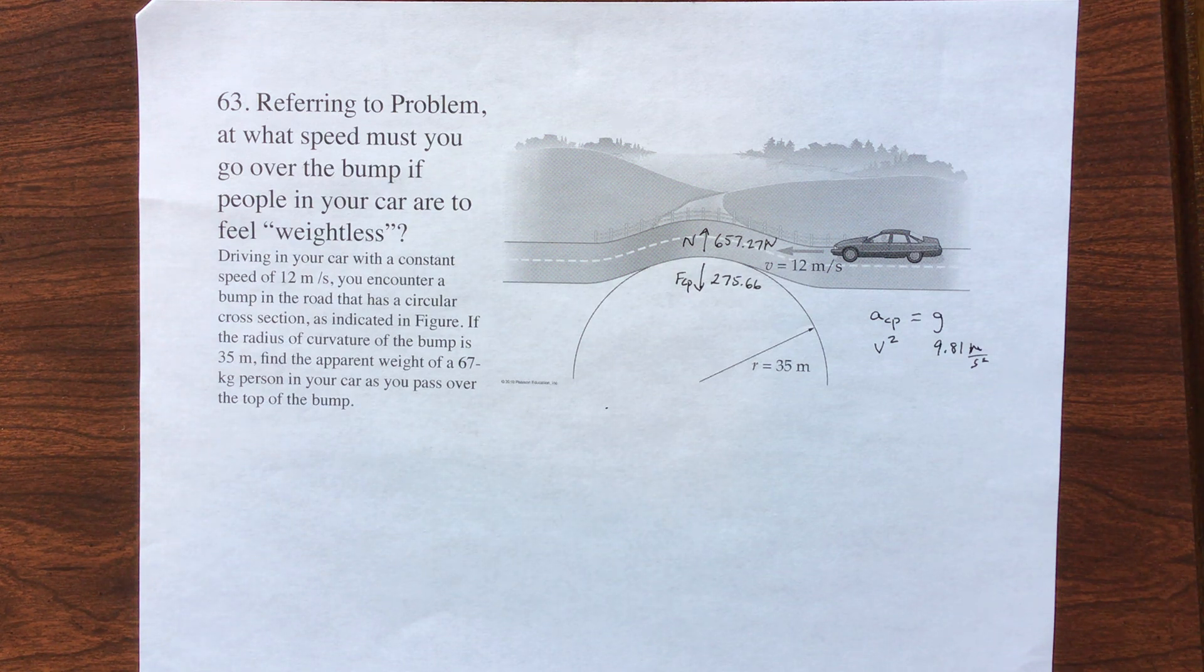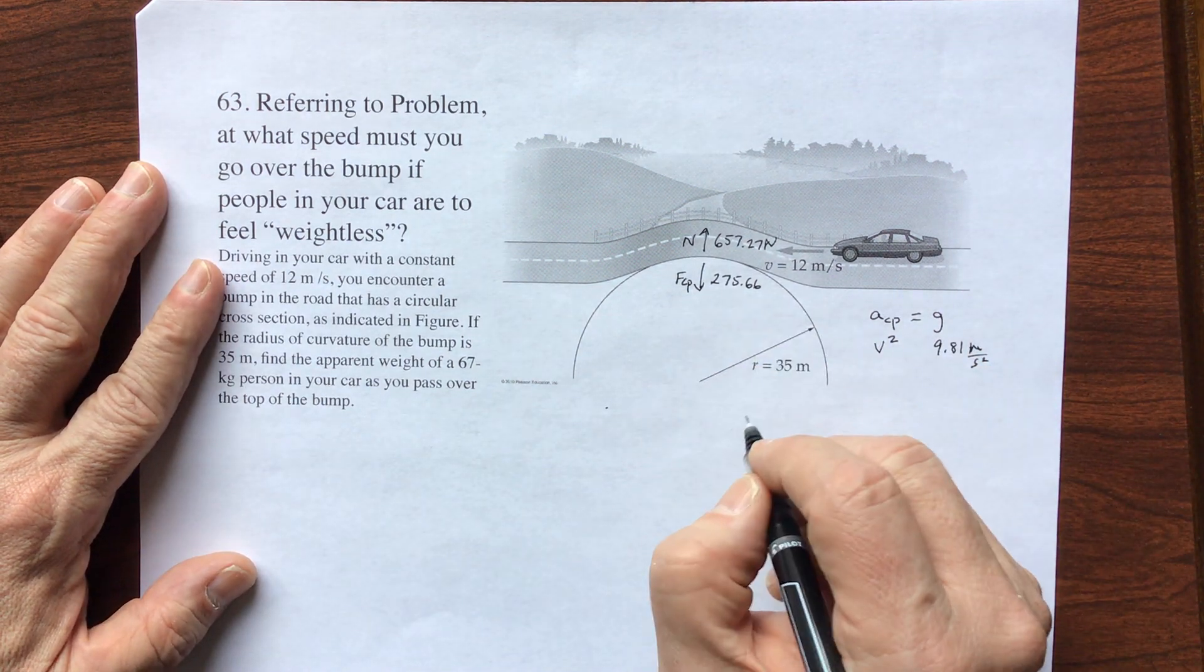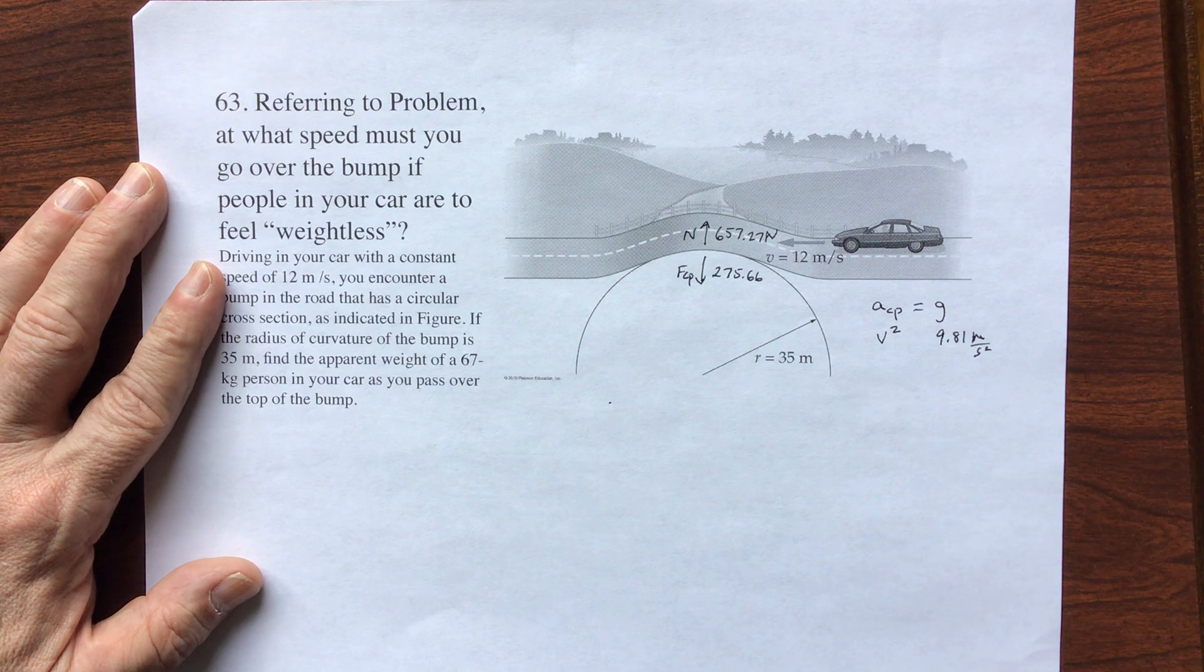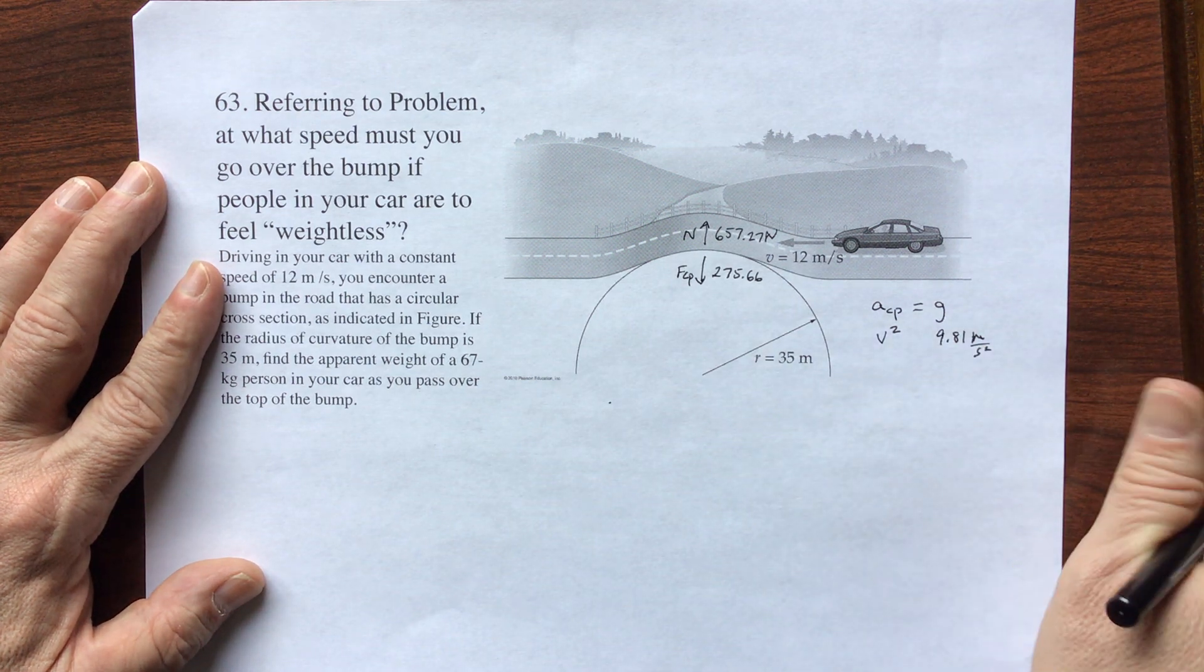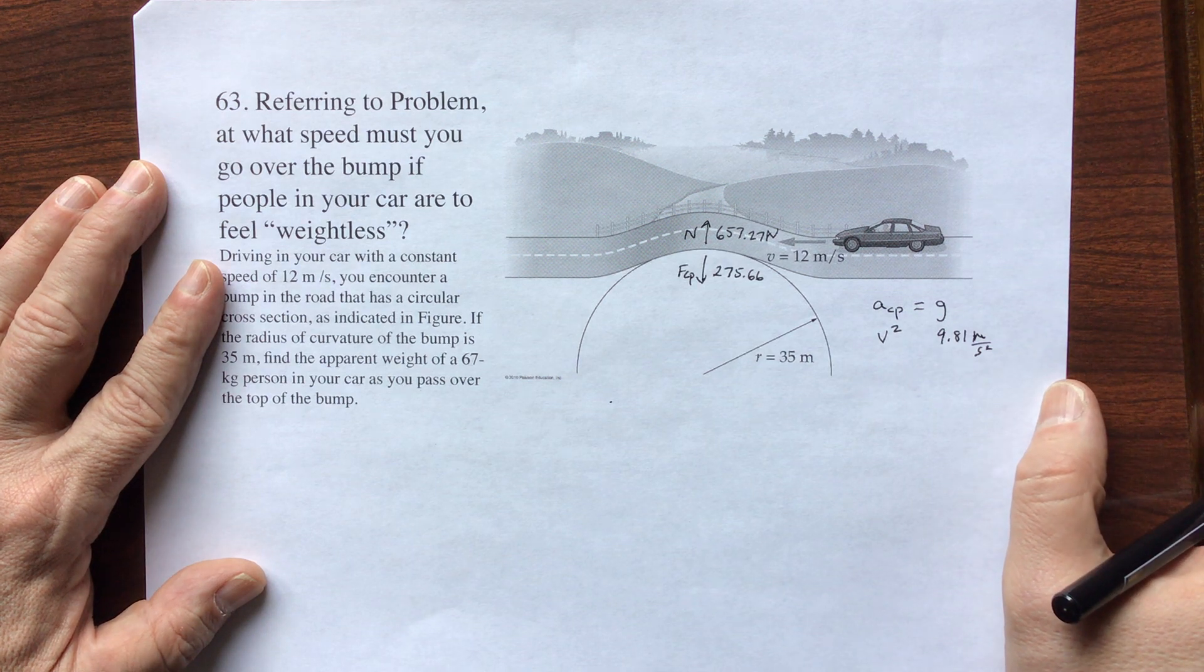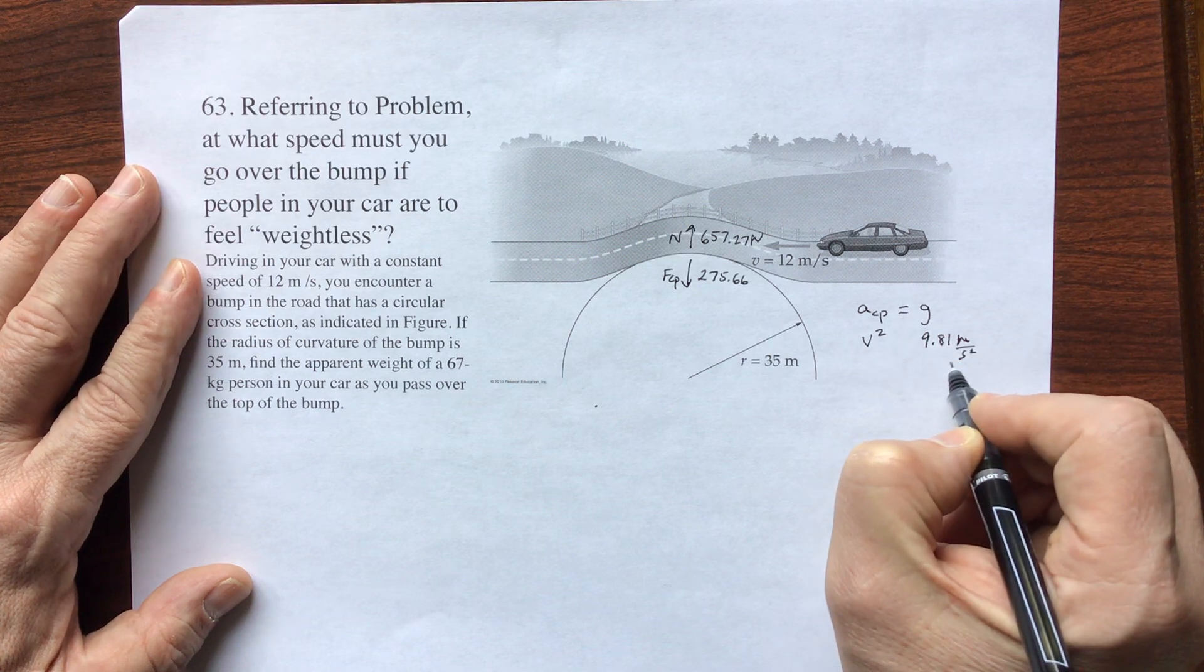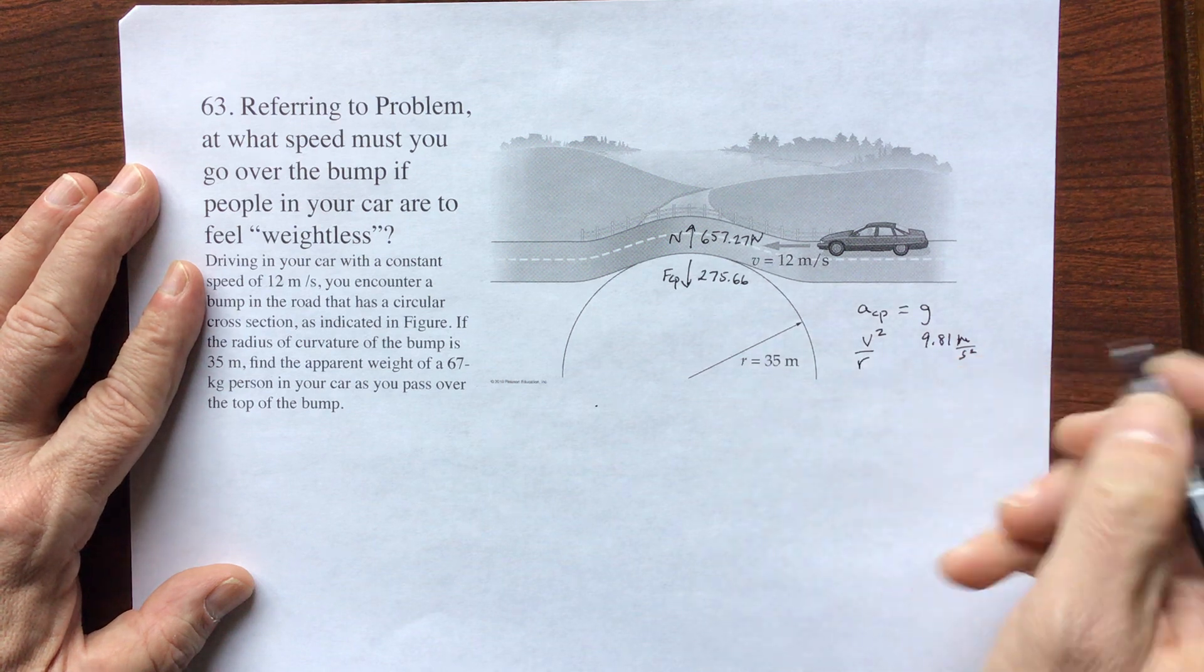All right, so there's a couple of different ways you could do this problem. If you feel weightless, what that means is that the only force acting on you is gravity. So your centripetal acceleration is equal to gravity. So if your centripetal acceleration is equal to g, then at that moment you feel like you're falling. You're weightless. So I just know that g is 9.81, and your centripetal acceleration is going to be v squared over r.